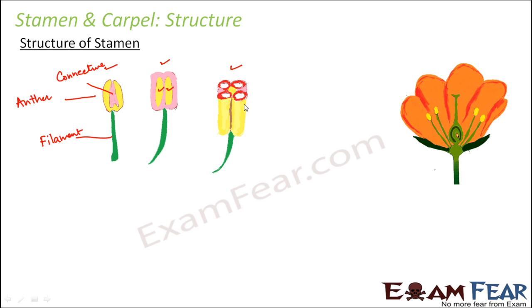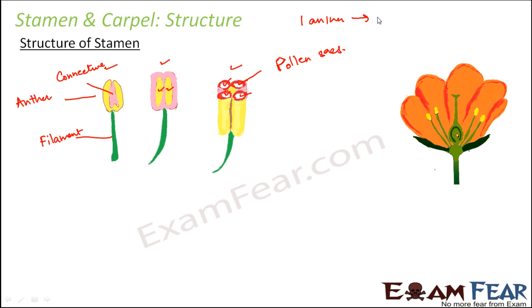If you look at the cross section of the anther very closely, you can actually see that each lobe of the anther has two chambers. Each lobe has two chambers, so in total we have four chambers. Each of these four chambers is known as a pollen sac. Pollen sacs are the chambers which are present inside the anther. One anther has four pollen sacs, and each pollen sac is filled with pollen grains. These pollen grains are the male gametes.